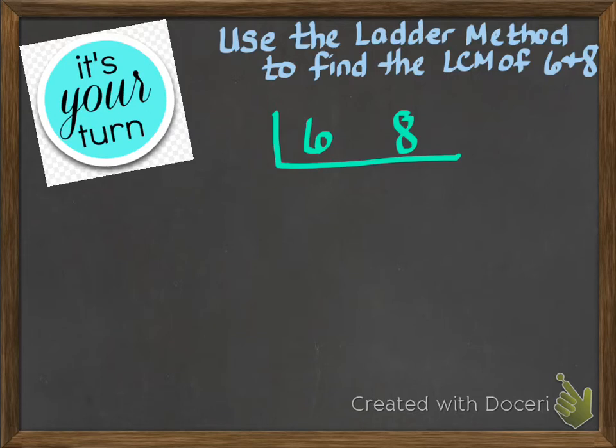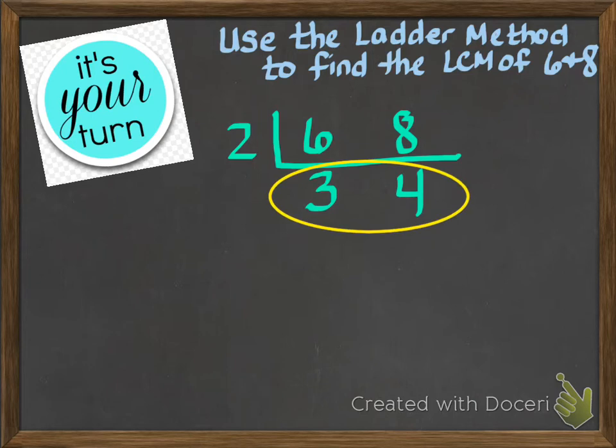Start with finding the smallest number that they have in common that's prime, and that number happens to be 2. Ask yourself, 2 goes into 6 how many times? That answer is 3. Then ask yourself, 2 goes into 8 how many times? That answer happens to be 4. Now your two new numbers are 3 and 4, so we're looking at these numbers right over here. They have nothing in common other than the prime factor 1, so you're basically done with this part.